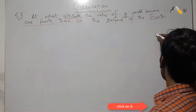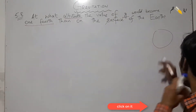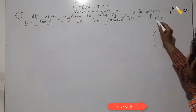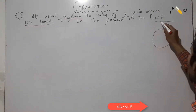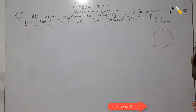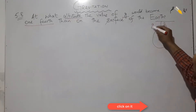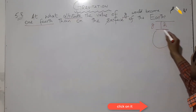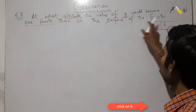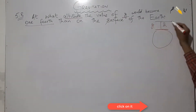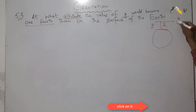If we look at the diagram, we have the Earth, and the question asks at what altitude — what height — the value of g on the surface of the earth would become one-fourth. So at this height, the g value is one-fourth.